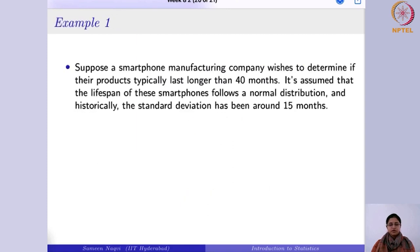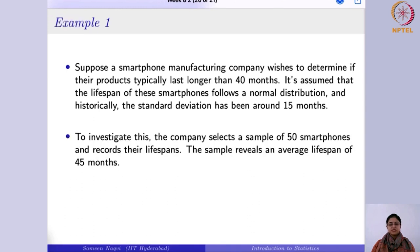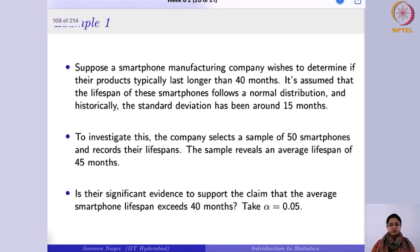Example: A smartphone manufacturing company wants to determine if their products typically last longer than 40 months. Smartphone lifespans follow a normal distribution, and historically the standard deviation has been 15 months. They select a sample of 50 smartphones and find an average lifespan of 45 months. We need to check whether there is significant evidence that the average lifespan exceeds 40 months, using α = 0.05.